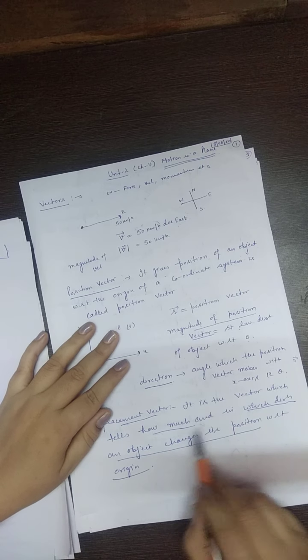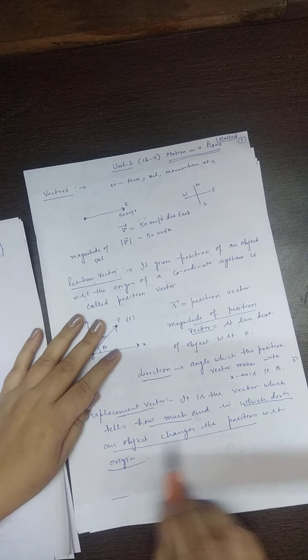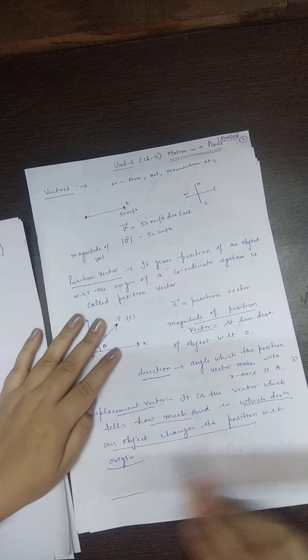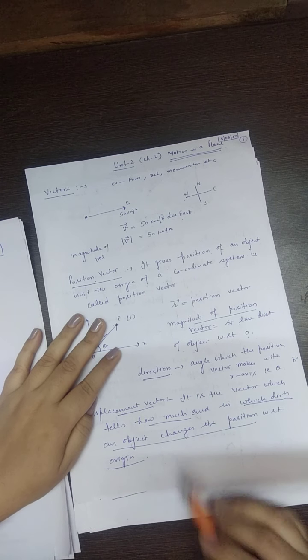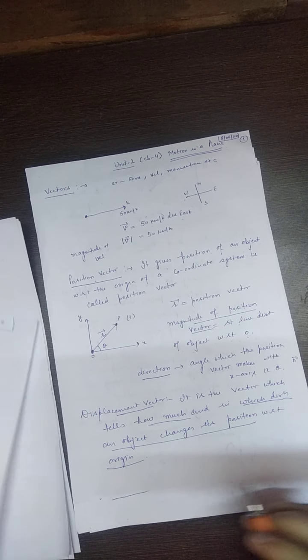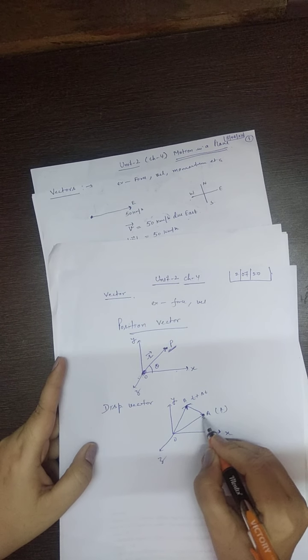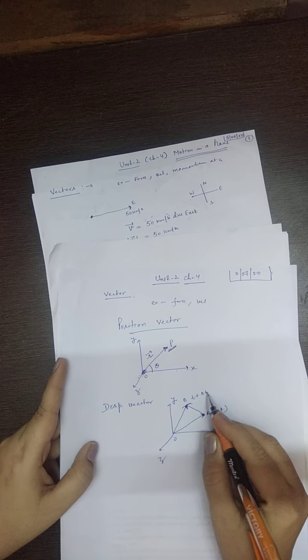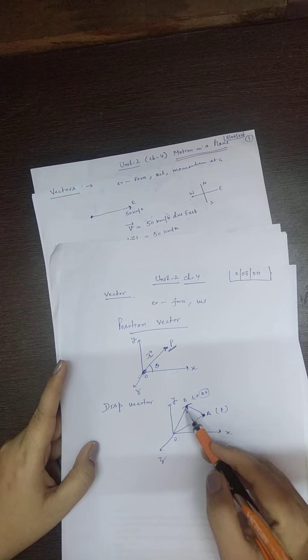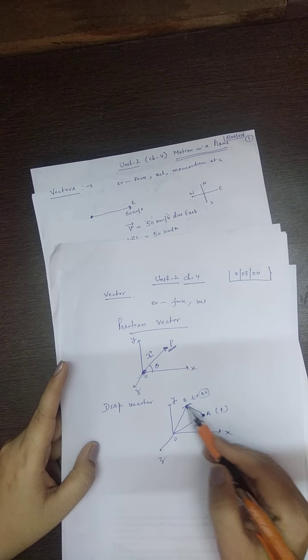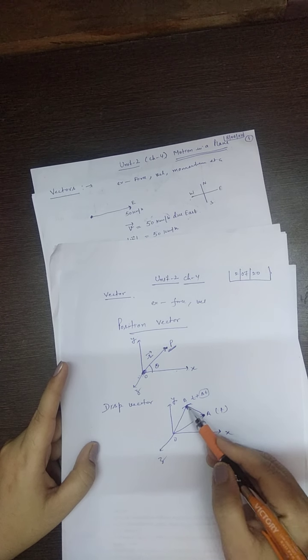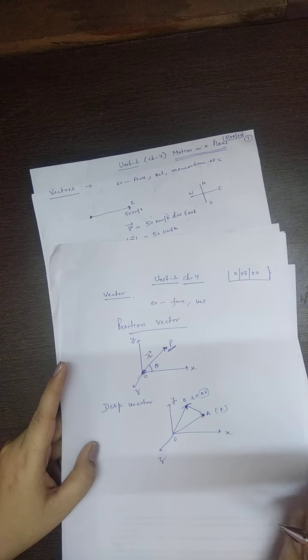Displacement vector is a vector which tells how much and in which direction an object changes its position with respect to origin. Kitna object ne apni position ko change kiya — pehle t time pe particle A pe tha, aur t plus delta t — delta t ka matlab small time interval — kahan pahuncha? B pe. Toh kitna displacement usne cover kiya? A to B — it is the shortest distance covered by the object in the time interval delta t.